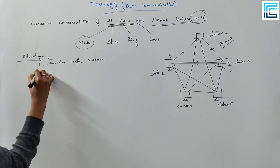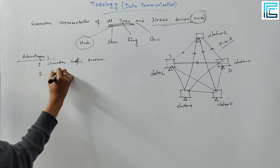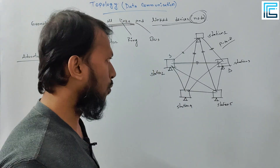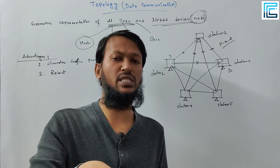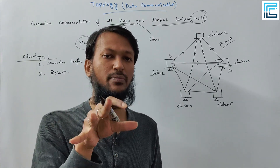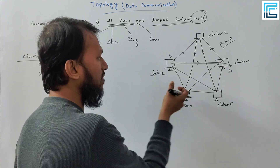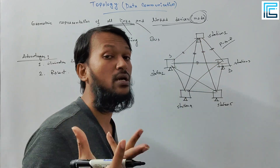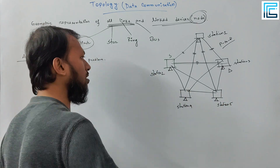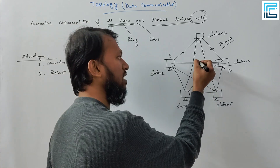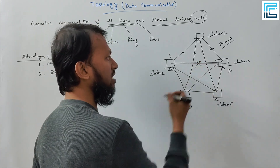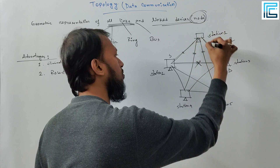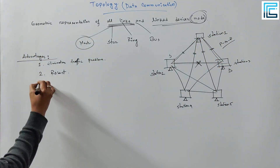The traffic problem is eliminated. The topology is also robust. If you have a device and you use a wire to set it up, and if one link goes down, you can still use another path to receive the same amount of data. The data pool is very robust.